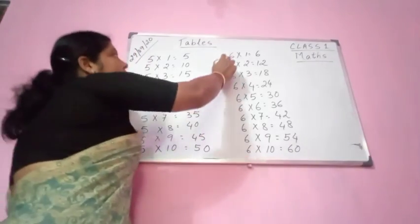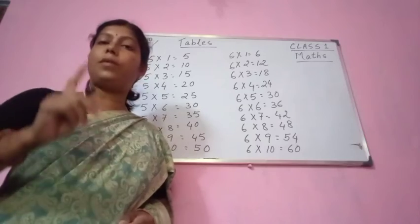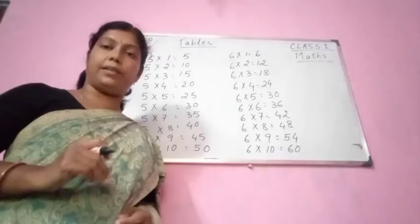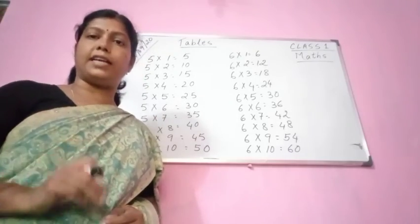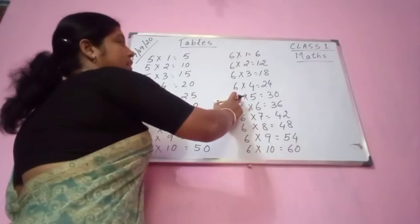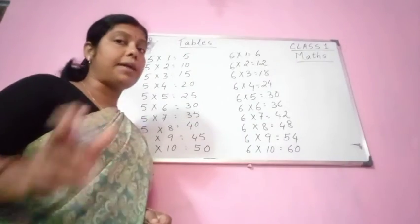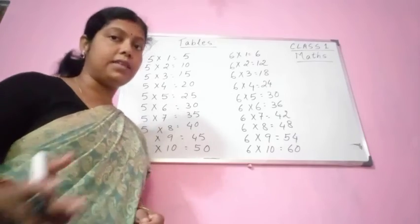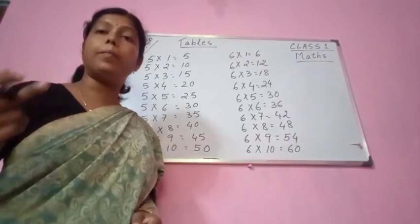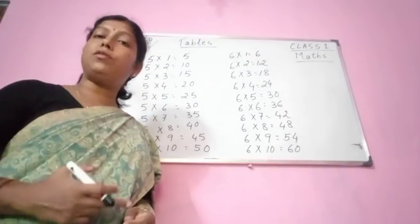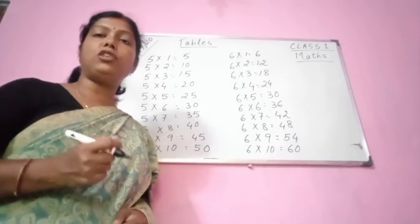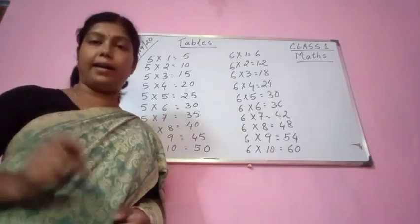6 ones are 6. If you count 6 plus 6 it will be 12. 6 plus 6 plus 6 is 18. 4 times if you add 6 it will be 24. 5 times it will be 30. 6 times it will be 36. 7 times it will be 42. 8 times it will be 48. 9 times it will be 54. And 10 times it will be 60. So multiplication is also known as repeated addition.